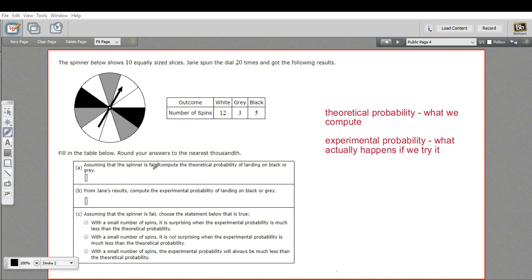A says, assuming that the spinner is fair, compute the theoretical probability of landing on black or gray. So here's a black, here's a gray, gray, black, gray. So there's five. So this is five out of ten.